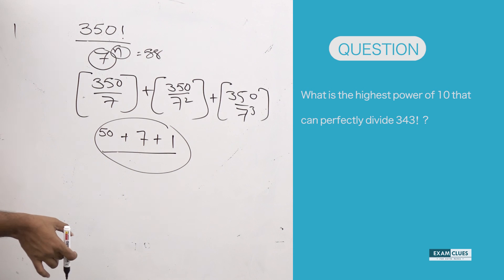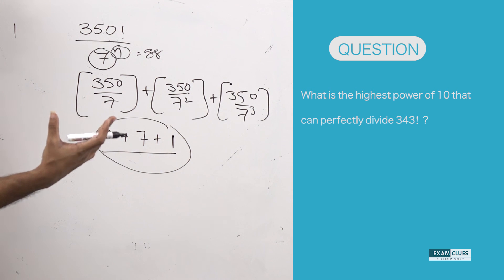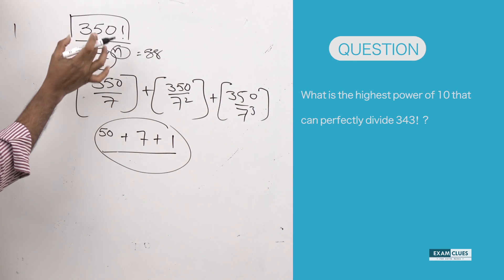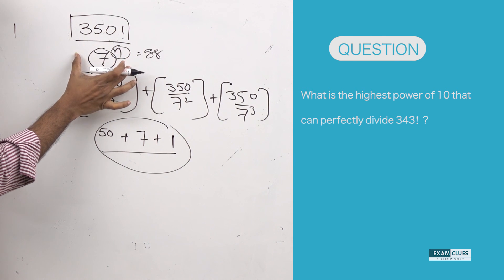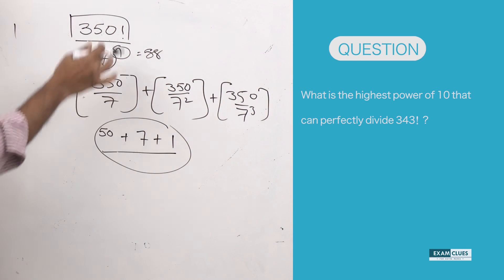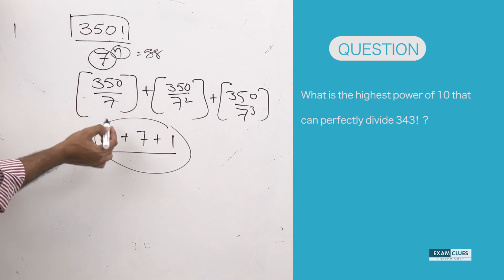So this is the concept behind: what is the highest power of a particular prime number that can divide the given factorial? If it's a composite number, we need to break it into prime numbers and then try to identify the prime number for which the power is smaller. I hope you understood the concept. We'll be coming up with more such interesting questions in the upcoming episodes. Stay tuned.